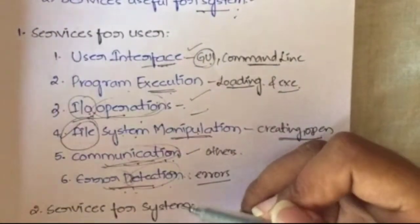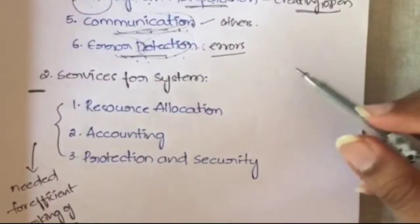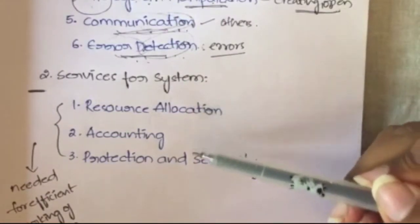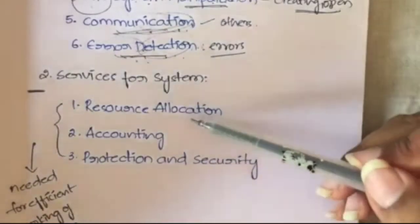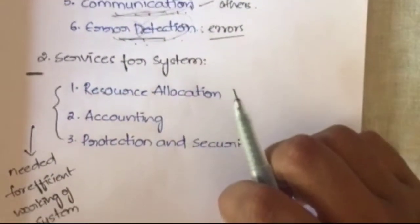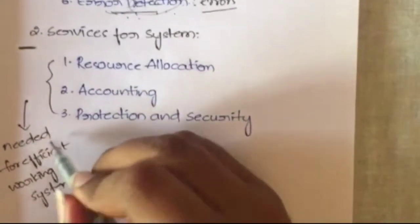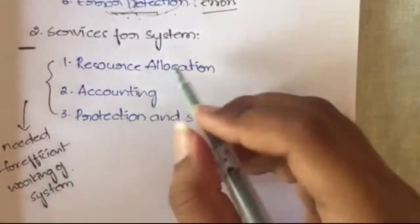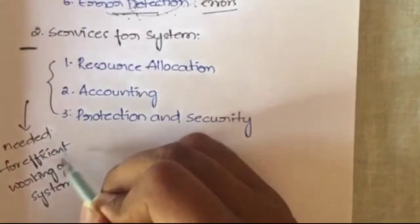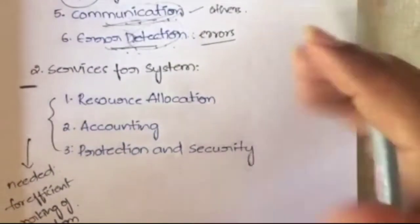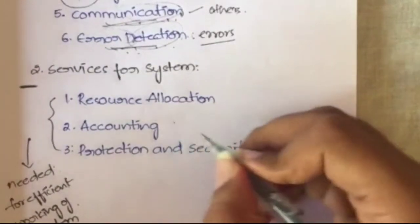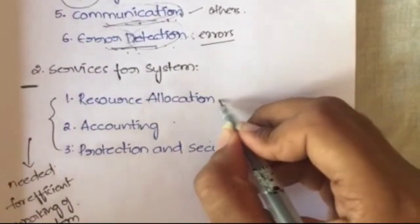Now let's look at the services that are useful for the system. There are three services useful for the system, and these three services are mainly needed to make the system function efficiently — they are required for the efficient working of the system.